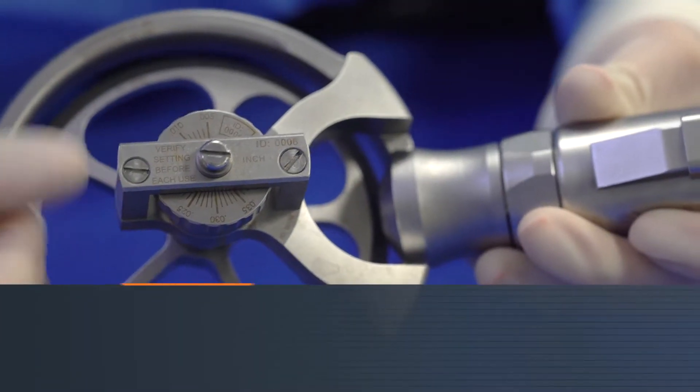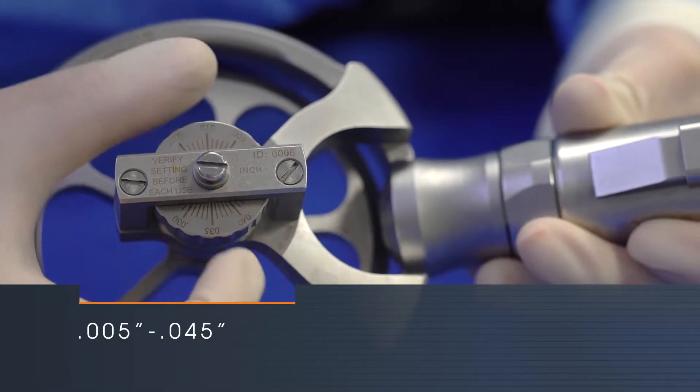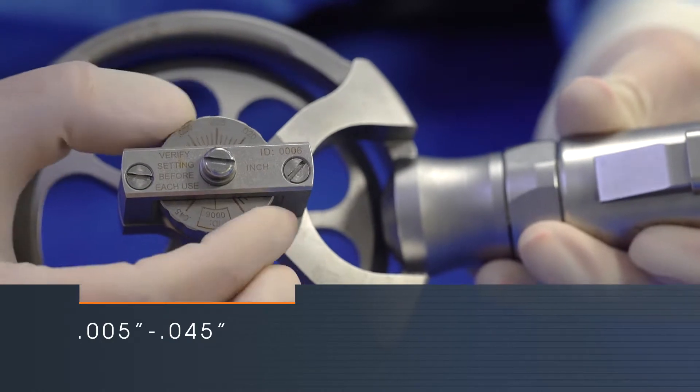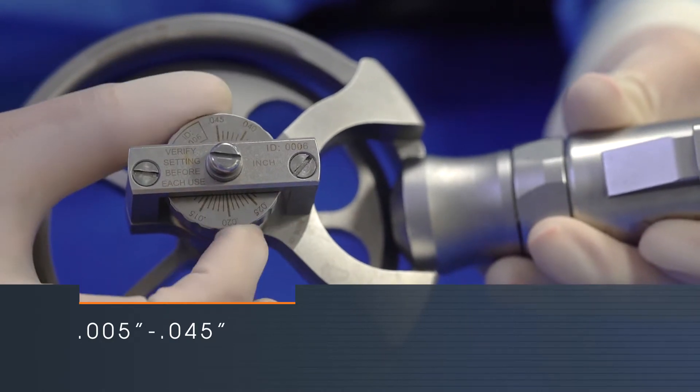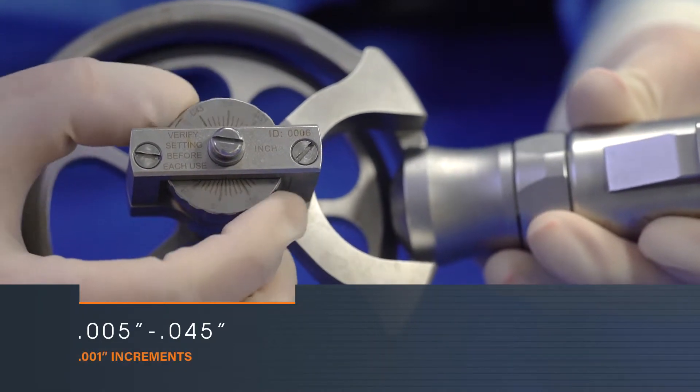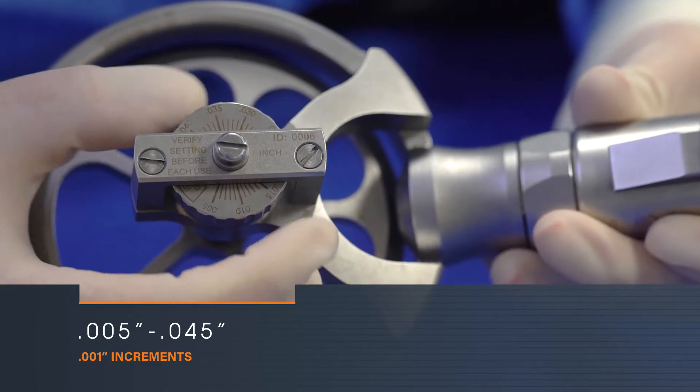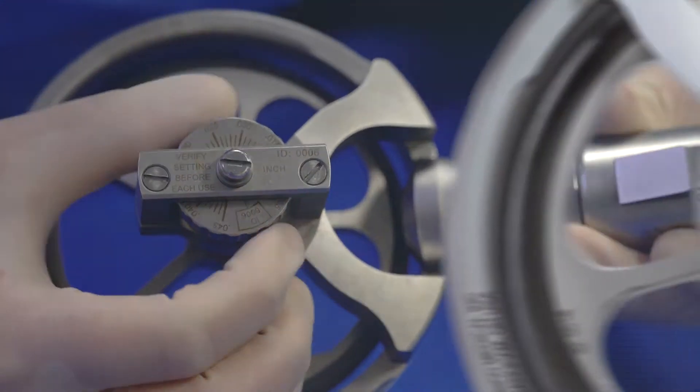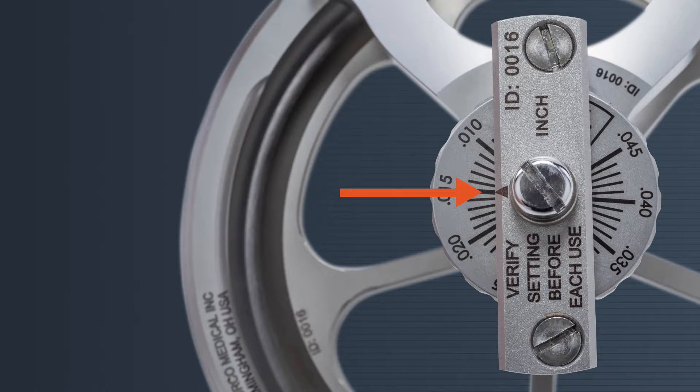The depth gauge dial has markings from 0.005 inches to 0.045 inches and can be adjusted in 0.001 inch increments at every tick mark. There is an arrow on the gauge to show where the thickness is set for the procedure. Think of the dial as a clock.